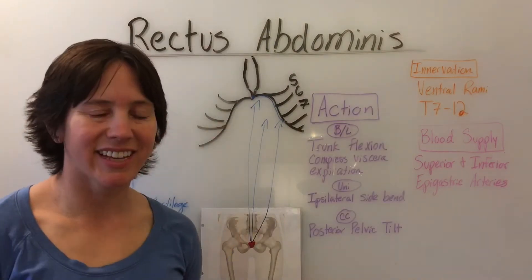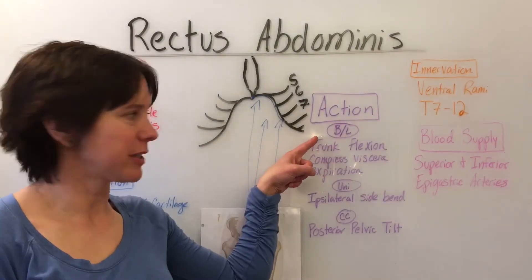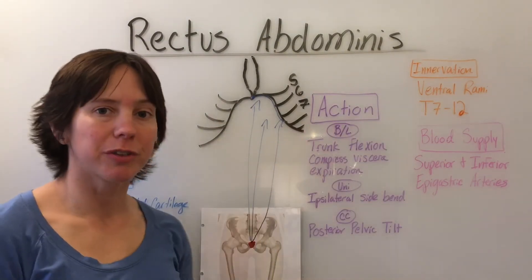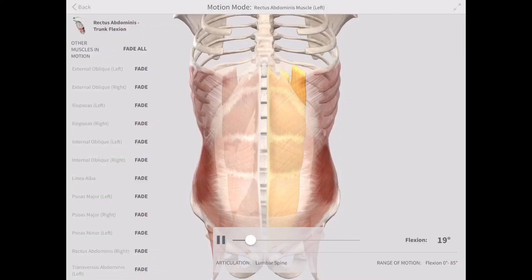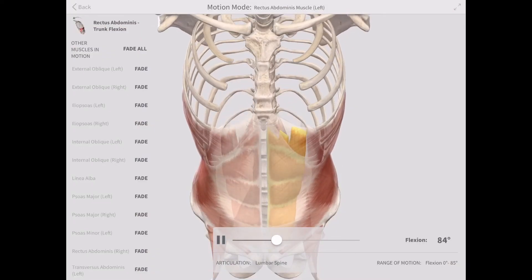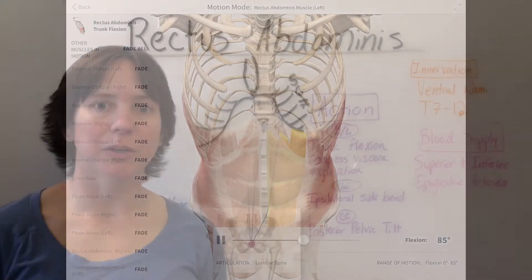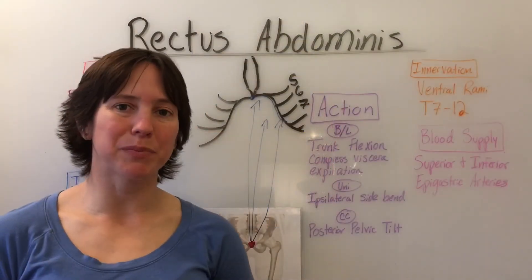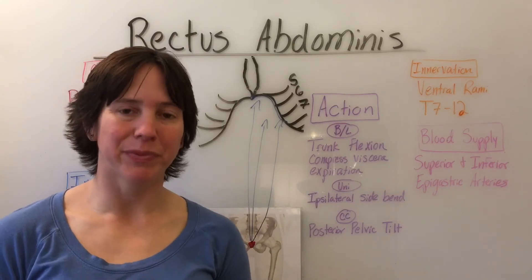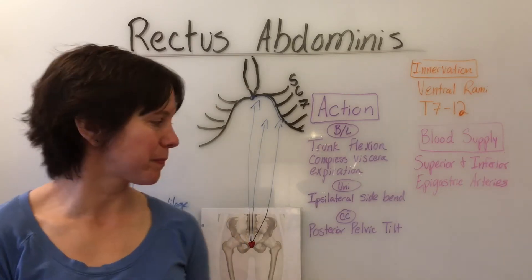The actions for the rectus abdominis bilaterally are trunk flexion, compresses abdominal viscera, and aids in expiration.